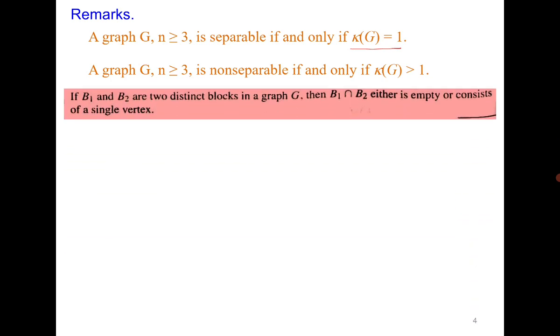One more observation is that if B1 and B2 are two blocks in a graph, then their intersection is either empty or they are connected through a cut vertex. You can see that if this is first block, second block, they are sharing a vertex or they can be disjoint. For example, block 1 and 3 have nothing in common.